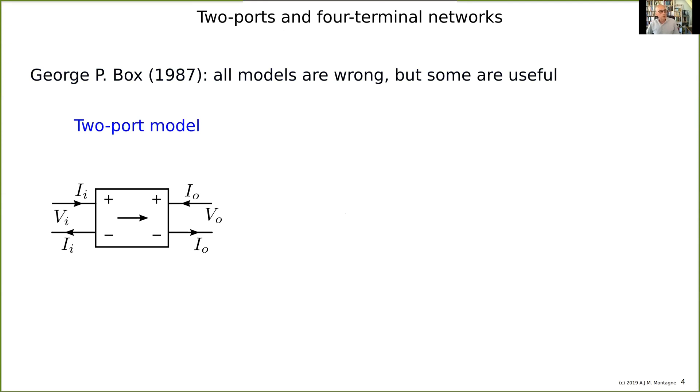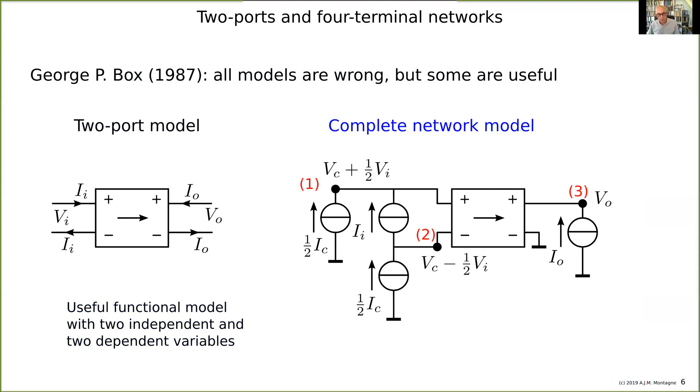We have seen two ports are basically four terminal networks, and the two port model is a model that we would like to use for the functional description of the amplifier. But in reality, the amplifier has four nodes so it needs three equations, and that follows from network theory as you can see here.